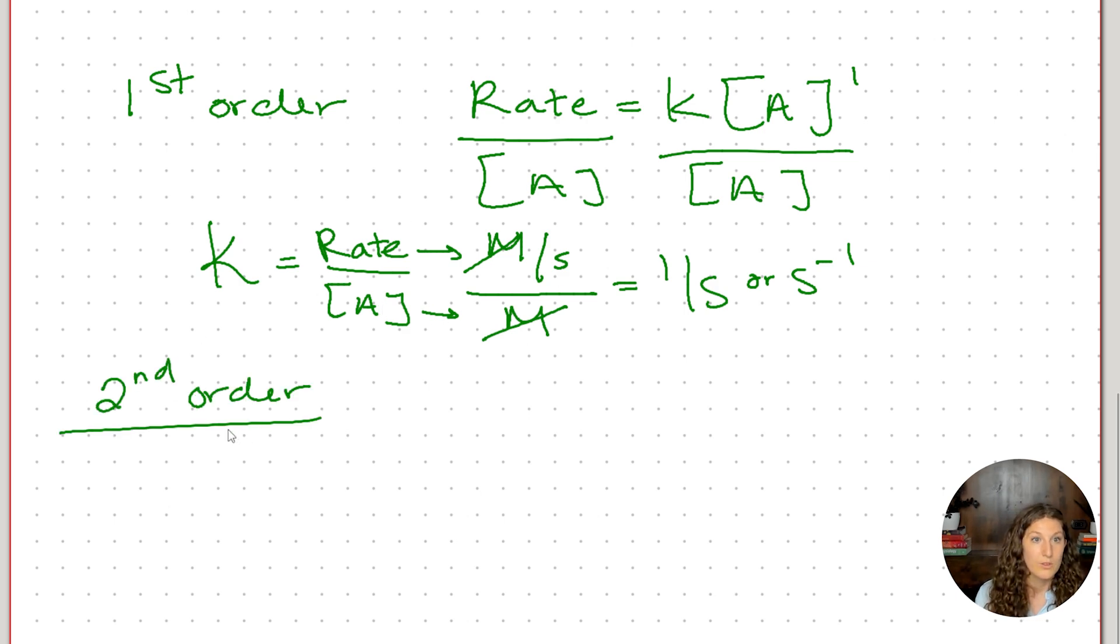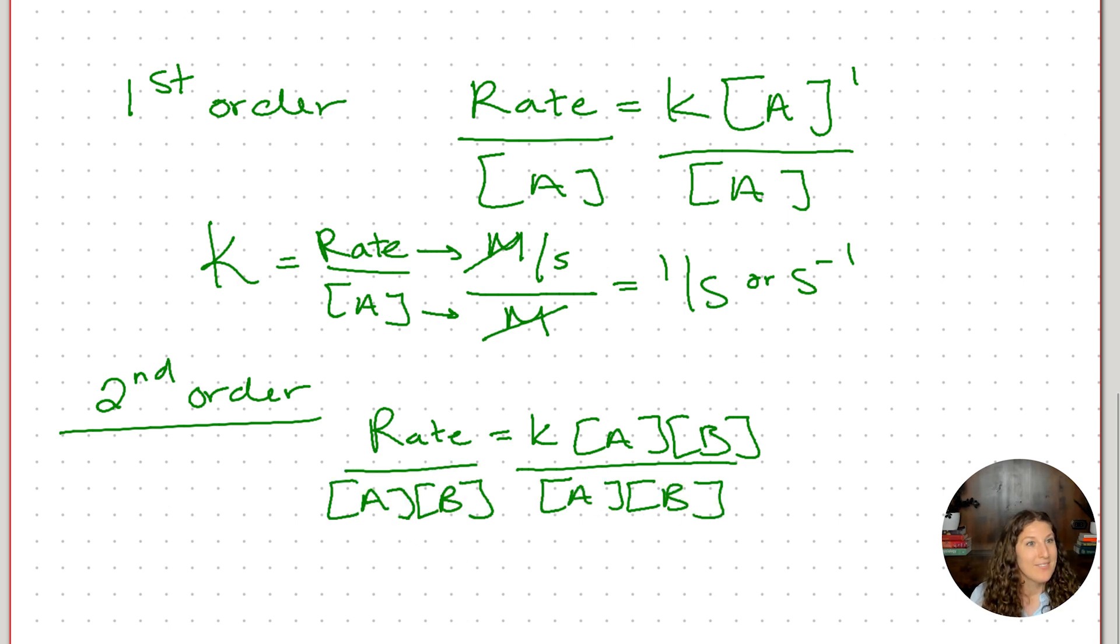For a second order reaction, we'll do the same thing, right? So rate equals k times A, and again in this case I'll just do A times B just to make it real obvious, but the same would be true if we used A squared, same math applies. So now we divide both sides by concentration of A times concentration of B. So now simplifying this out, we have k equals rate over the concentration of A times the concentration of B. And again, if we look for units, rate is in molarity per second and each of these concentrations is in molarity, right? So molarity times molarity.